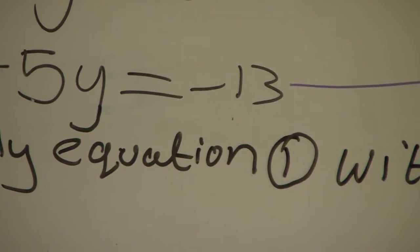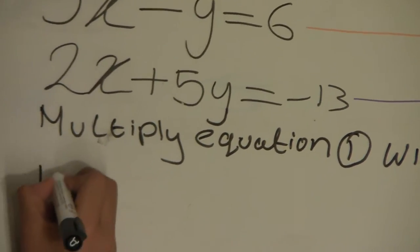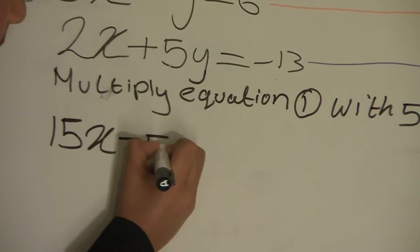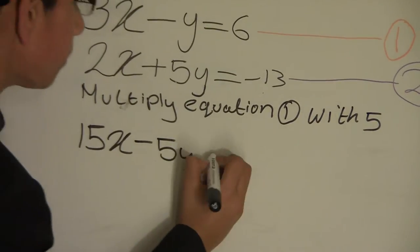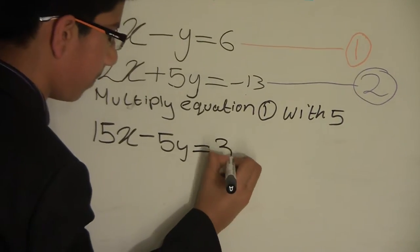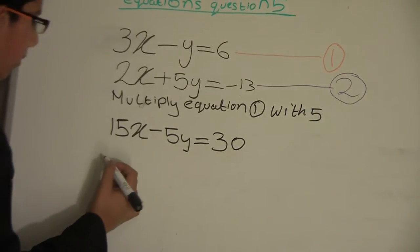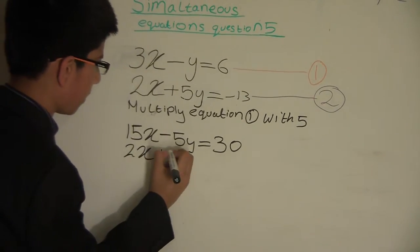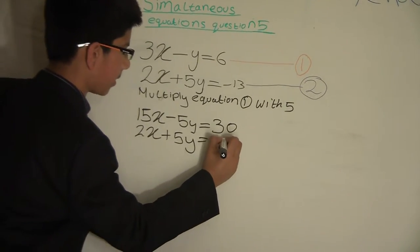When we work that out, 3x times 5 equals 15x, minus 5y because we multiply 5 with y, equals 5 times 6 equals 30. Then we will write equation number 2 down to make it easier: 2x plus 5y equals minus 13.